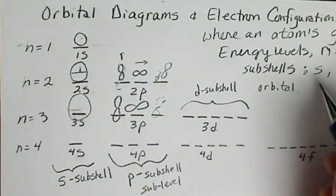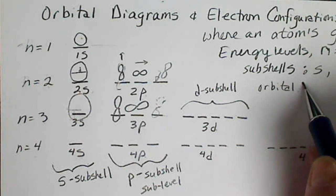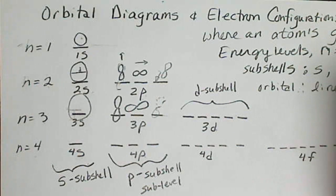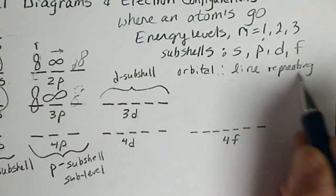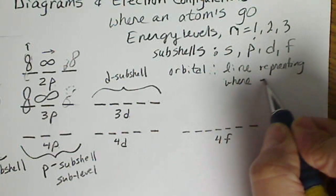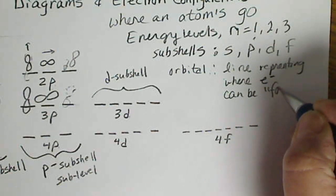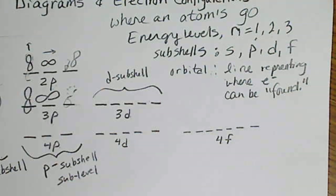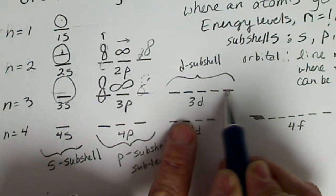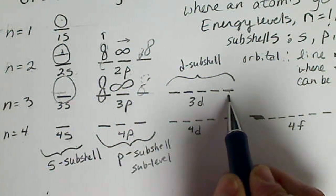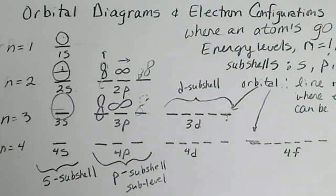The orbital is really just, in this case, the orbital is the line representing where the electron can go. So the orbital is a line representing where electrons can be found. Again, there's that probability there. So this would be a 4F orbital. This line would be a 3D orbital, and a 2P orbital. So an orbital is the specific place where an electron can be found.